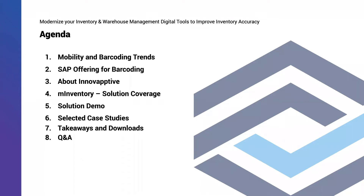We will also take a look at SAP's current offerings for barcoding to integrate with the SAP ECC and S4 HANA systems. We will introduce you to Innovative and talk about our M-Inventory solution and how it supports SAP for barcoding and mobile warehouse management. We will show you a brief demo, look at a few case studies, review key takeaways, and share download links where you can try the solution. We will spend a few minutes on Q&A.